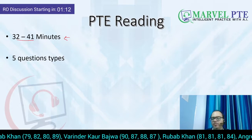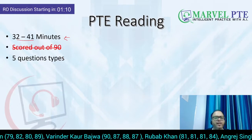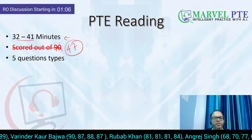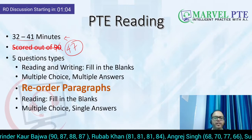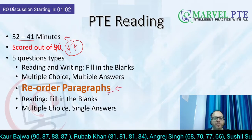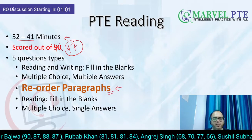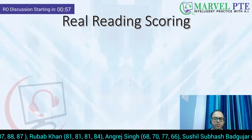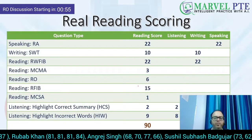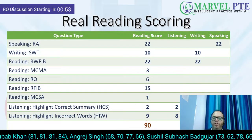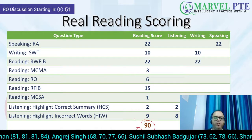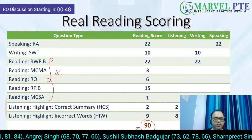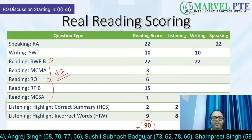PTE Reading — the reorder paragraphs are a part of PTE Reading. It is 32 to 41 minutes long and you have to manage your time yourself. It is not scored out of 90; it is scored out of 47 marks. There are five question types, and the third question type in this series is reorder paragraph. This is today's topic, and this is the real scoring of PTE Reading, where you can see how the 90 comes for reading, with the reading module contributing 47 marks.